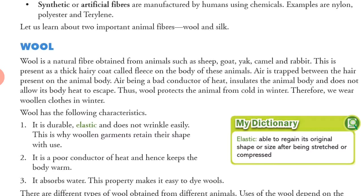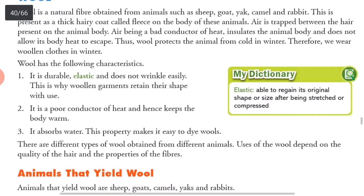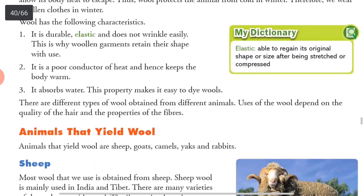Therefore we wear woollen clothes in winter. Wool has the following characteristics: it is durable, elastic and does not wrinkle easily. This is why woollen garments retain their shape with use. It is a poor conductor of heat and keeps the body warm. It absorbs water, which makes it easy to dye wool.